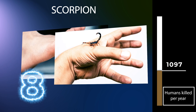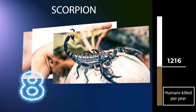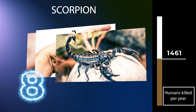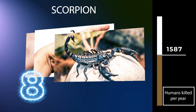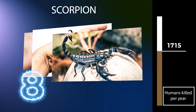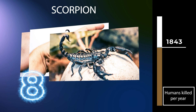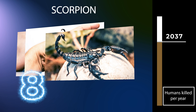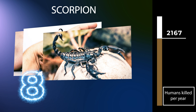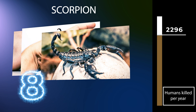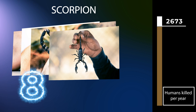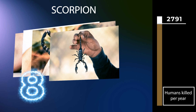There are over 2,500 described species, with 22 extant living families recognized to date. Scorpions primarily prey on insects and other invertebrates, but some species hunt vertebrates. They use their pincers to restrain and kill prey, or to prevent their own predation. The venomous sting is used for offense and defense. The vast majority of species do not seriously threaten humans, and healthy adults usually do not need medical treatment after a sting.